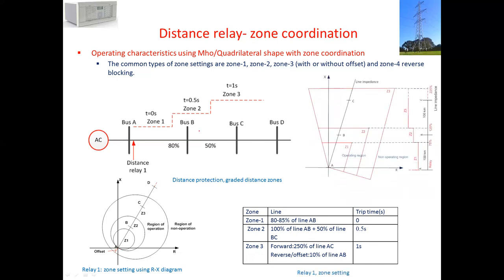Another shape is using quadrilateral characteristics. This is a better option for resistive coverage because it can go a bit down on the R section, more resistive. Zone 2, for example, if we use this one, it goes down slightly here. But with Mho, it doesn't go that much. This is the shape now. Zone 1, zone 2, zone 3 have the same application.